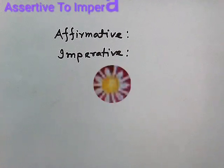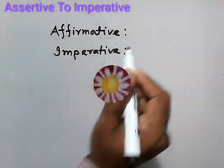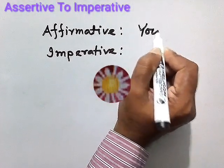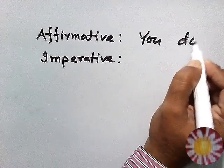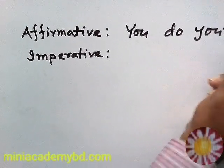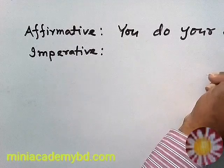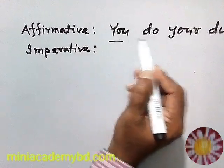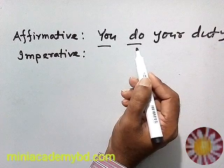In assertive sentence, if we write here: 'You do your duty.' So, 'you do your duty' — here 'you' is the subject, and 'do' is the verb.